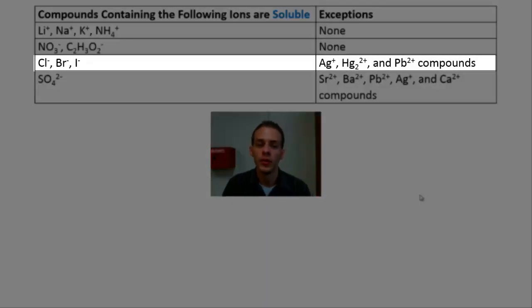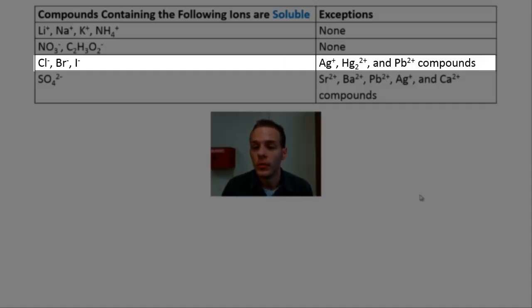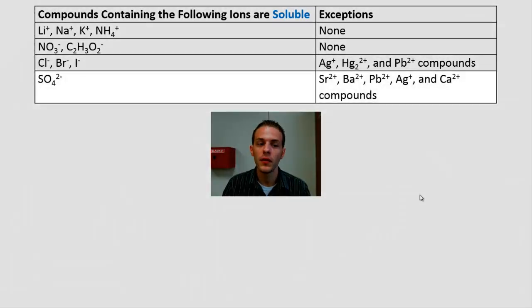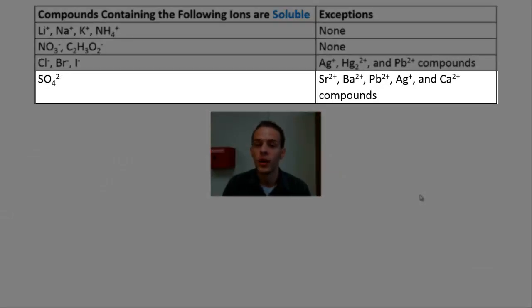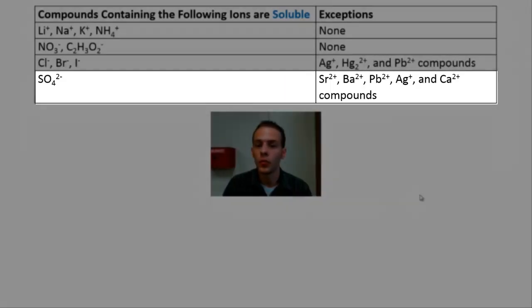The next rule covers chloride, bromide, and iodide ions — these are generally soluble, but there are exceptions. When chloride, bromide, or iodide is paired with silver ion, mercury(II) ion (Hg₂²⁺), or lead(II) ion, those compounds are insoluble. Otherwise, chlorides, bromides, and iodides are soluble. For sulfates (SO₄²⁻), they are generally soluble, but five exceptions exist: strontium, barium, lead(II), silver, and calcium sulfates are all insoluble.